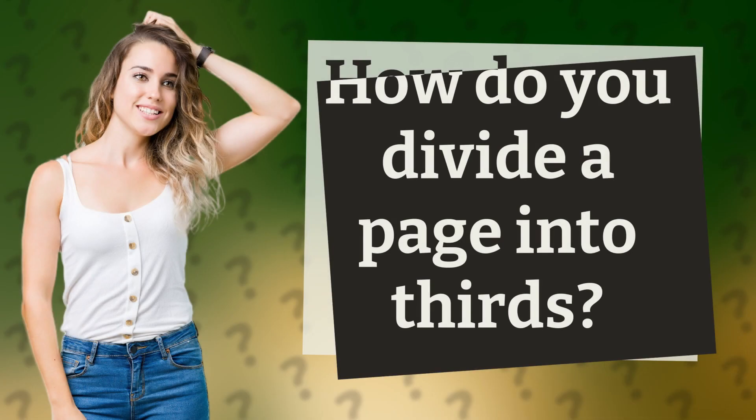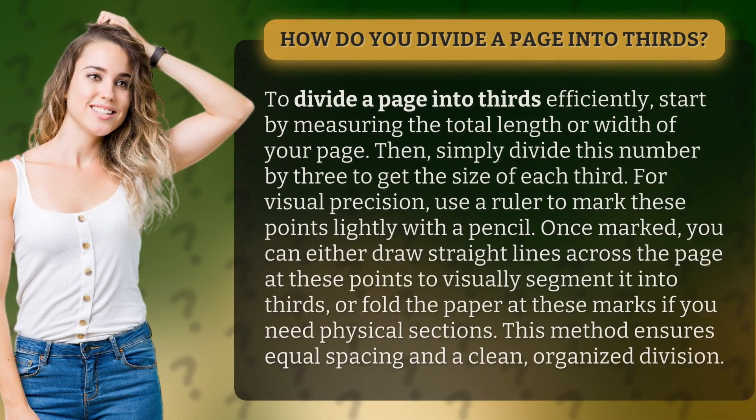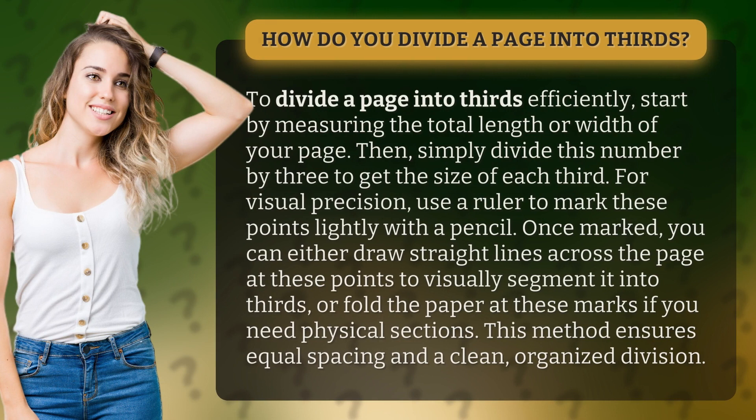How do you divide a page into thirds? To divide a page into thirds efficiently, start by measuring the total length or width of your page. Then, simply divide this number by three to get the size of each third.